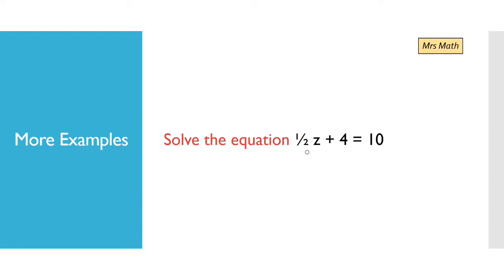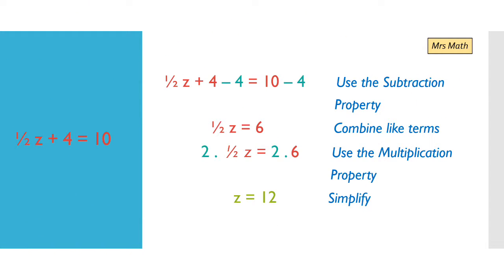More examples. Solve the equation: half z plus 4 equals 10. We have to identify the operations involved. The operations are addition by 4 and multiplication by one-half, or dividing by 2. Half z is the same as z over 2. The inverse of division by 2 is multiplication by 2, and the inverse of addition is subtraction by 4. Which operation do we use first? Subtraction first.